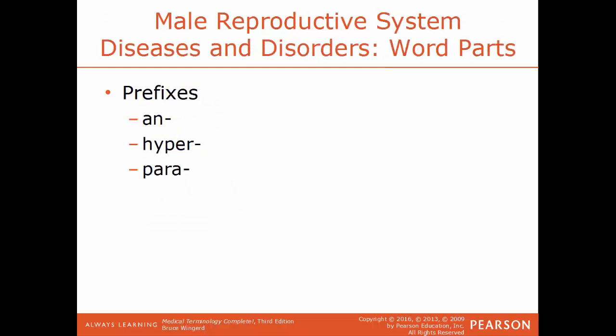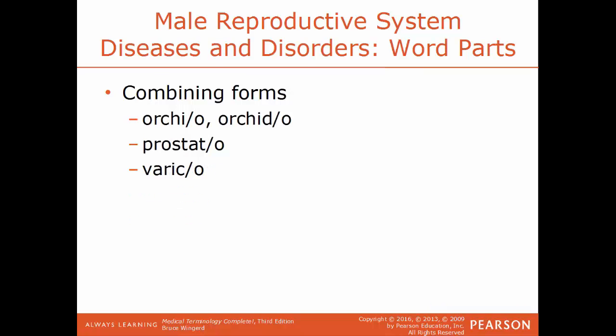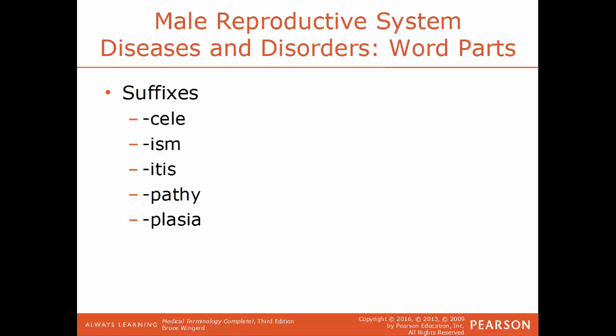Common diseases and disorders of the male system and their word parts: prefixes include An for lacking or without, Hyper for above, and Para for nearby or alongside. Combining forms include Andro for male, Milano for glans penis, Crypto for hidden, Epididymo for the epididymis, Hydro for water, Orchio or Orchido for testes, Prostato for the prostate gland, and Varico for varicose veins. Suffixes include Seal for hernia, Ism for a condition, Itis for inflammation, Pathy for disease, and Plasia for formation.